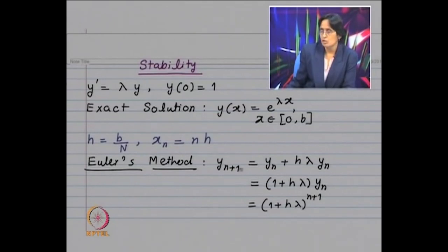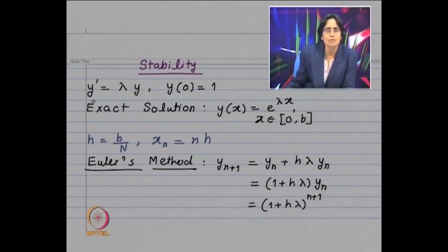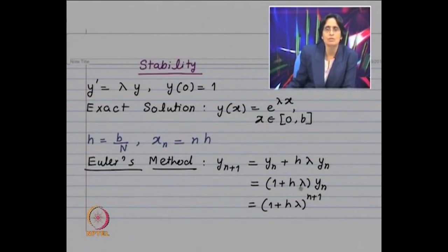In Euler's method, y' = λy is a differential equation of first order, and y_{n+1} = (1+hλ)y_n is again a difference equation of first order — confirming that single-step methods preserve the order.